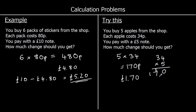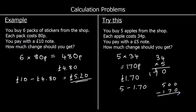You pay with a £5 note, so we need to take 170p off of £5, which is 500p. Using the written method: 0 take away 0 is 0. We can't do 0 take away 7, so we take one of the hundreds, worth 10 in the tens. 10 take away 7 is 3, and 4 take away 1 is 3. So 330p, or £3.30.